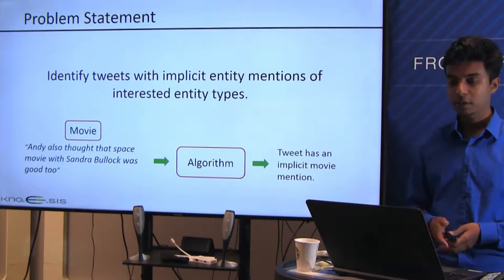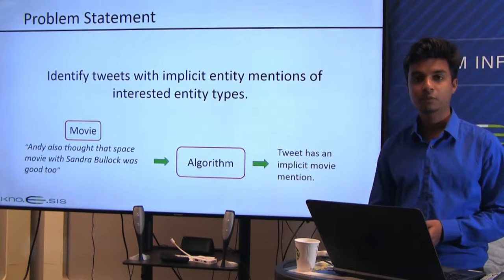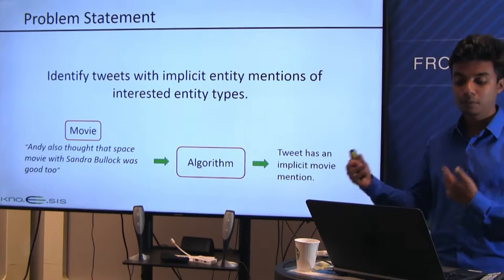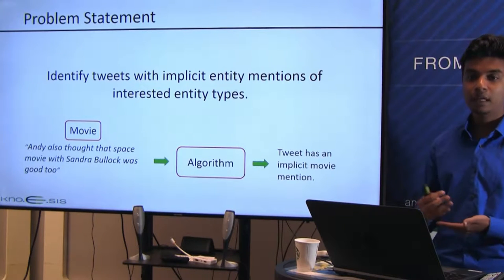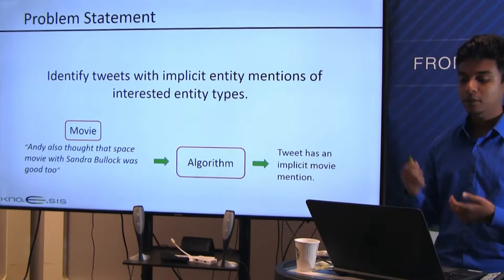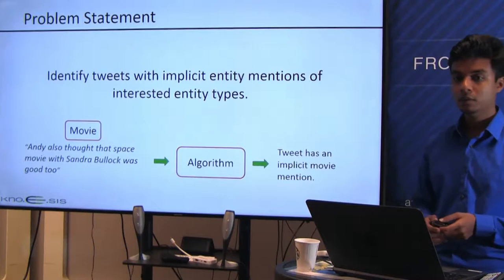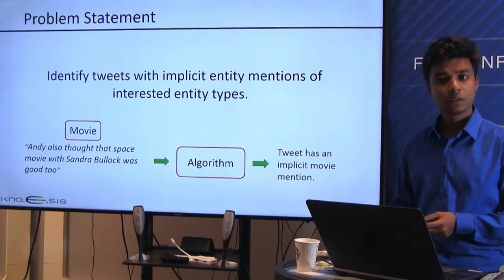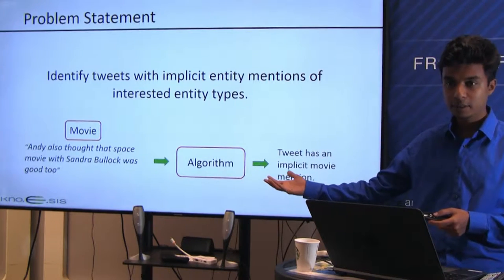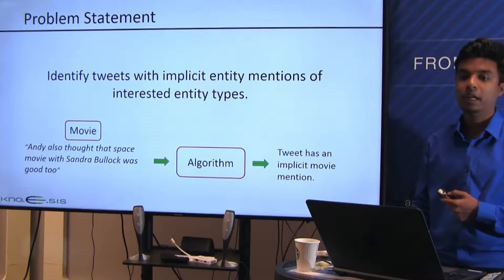Given an interested entity type like movie and a tweet like 'Andy also thought that space movie with Sandra Bullock was good too,' I ask: does this tweet have an implicit entity mention of the type movie? If it does, I'll say it has one; if not, I'll say it does not. So I filter tweets which have implicit entity mentions.